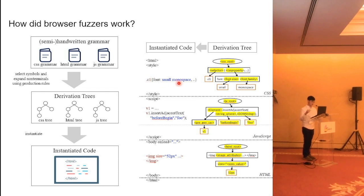This is the CSS code generated by this derivation tree. Similarly, we can generate JavaScript code and HTML code and finally combine them to a test case. That's how existing browser fuzzers work. But the question we put here is, are they good enough?